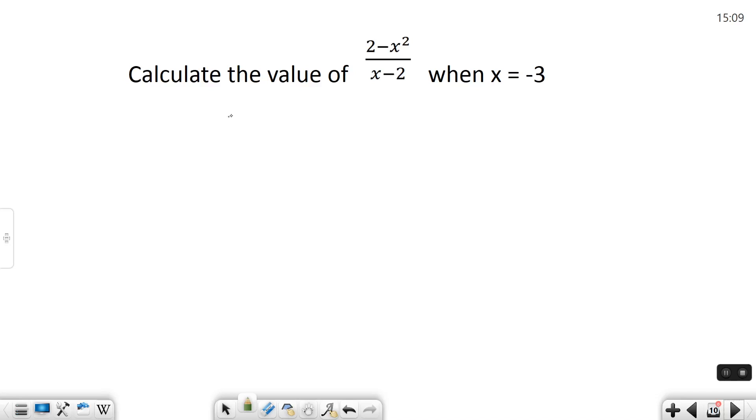So I have 2 minus negative 3 squared over negative 3 minus 2. Anytime I'm plugging in a value for a variable, I use parentheses. It's a pretty good practice to keep in mind, and it helps me take care of negatives and understand the difference between negative and positive numbers.